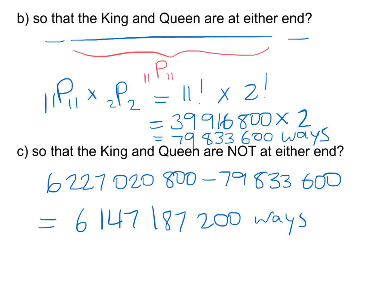The big ideas here: make sure you understand mutually and non-mutually exclusive events and calculate them accordingly. When asked for AND, multiply; when asked for OR, add. The indirect method — subtracting unwanted outcomes from all possible outcomes — is especially handy when finding arrangements where certain events do NOT happen. Thanks for watching, I hope you learned something!